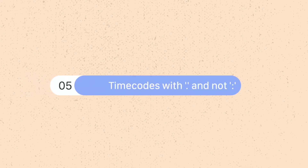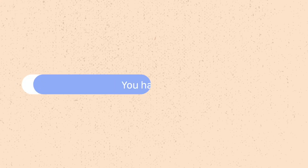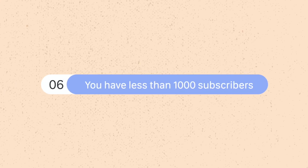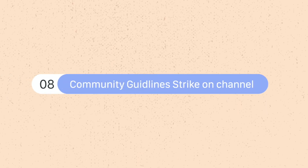Another reason might be that your time codes are set with a full stop instead of a colon. If you have less than a thousand subscribers, chapters will also not be working because you're not eligible. Your video content might be inappropriate to some viewers, which will also cause it not to work. Also, if you have a community guideline strike on your channel, chapters will not be working until that strike expires. You can check by going to studio.youtube.com, signing into your account, and seeing whether or not you have a guideline strike.